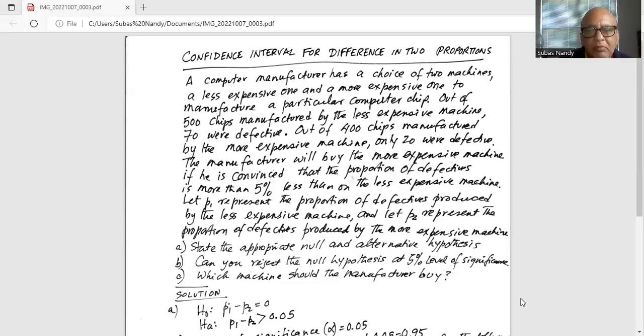The manufacturer will buy the more expensive machine if he is convinced that the proportion of defectives is more than 5% less than on the less expensive machine. Let P1 represent the proportion of defectives produced by the less expensive machine and let P2 represent the proportion of defectives produced by the more expensive machine.